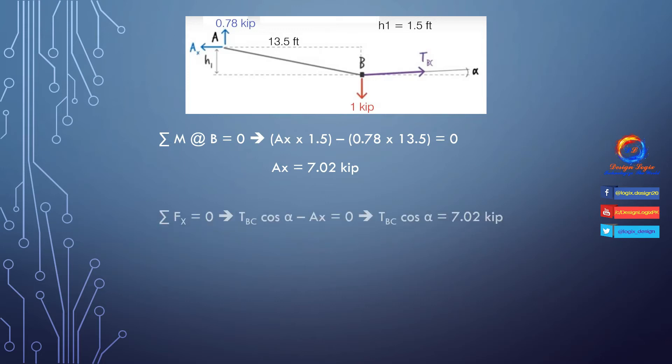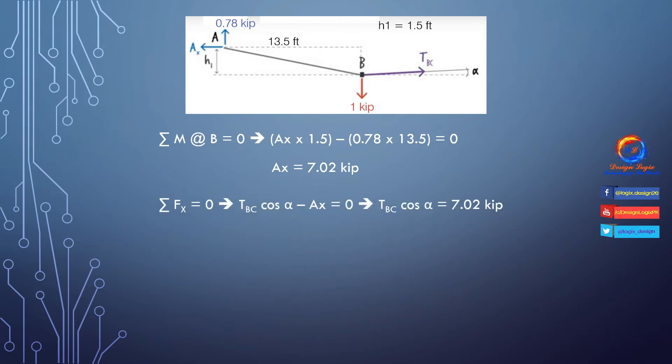Using summation of Fy equals zero: TBC × cos(alpha) − Ax = 0, where TBC × cos(alpha) is the horizontal component of force TBC. Substituting the value of Ax gives TBC × cos(alpha) = 7.02 kips.